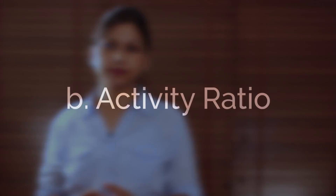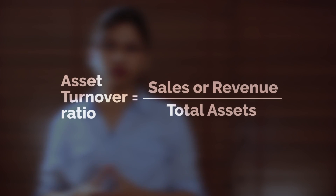The next ratio is the activity ratio, also called the efficiency ratio. This ratio helps an investor to understand how efficiently the company is deploying its resources under fixed assets and working capital. It is important because the investor can also judge the efficiency of the management through this ratio. A very commonly used ratio in this category is the asset turnover ratio.